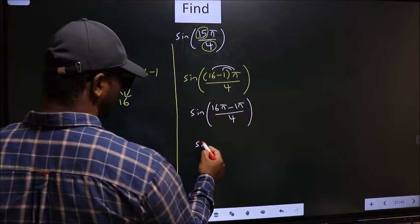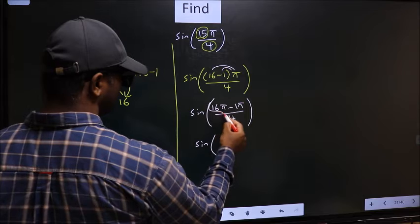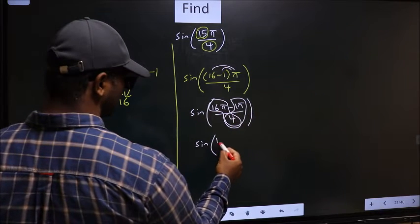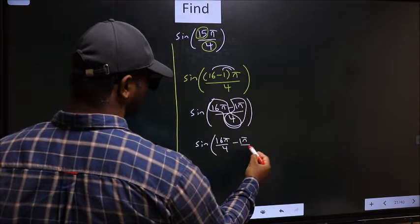Now sine. You should split the denominator in this way. That is 16π by 4 minus 1π by 4.